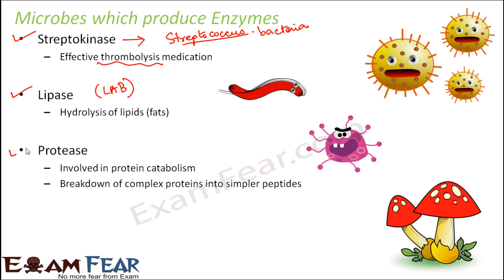Protease helps in breaking down proteins — it helps in protein catabolism, breaking down complex proteins into simpler peptides. Proteins are made up of amino acids joined by peptide bonds to form peptides, and many peptides join to form polypeptides or proteins. During metabolism and digestion, proteins need to be broken down into simpler peptides and then into amino acids so they can be absorbed.